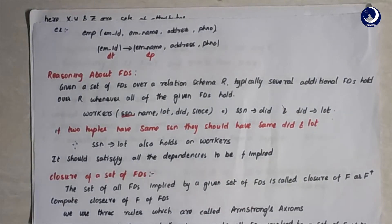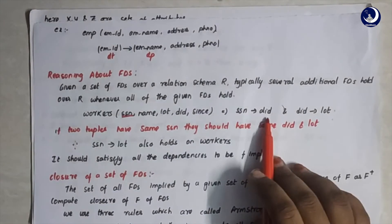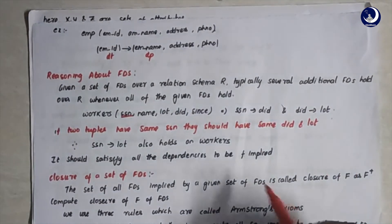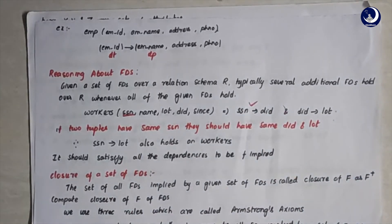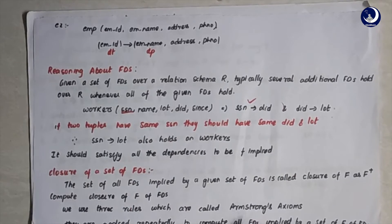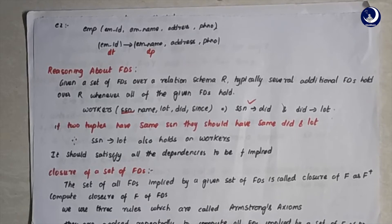If we are storing the same person's SSN twice, then of course the DID and lot will also be the same. When we say SSN→DID and DID→lot, we are indirectly saying that SSN also defines lot — this should also hold on the workers table. A particular functional dependency is said to be implied on a table only if it satisfies all the functional dependencies, including underlying ones, of that instance.